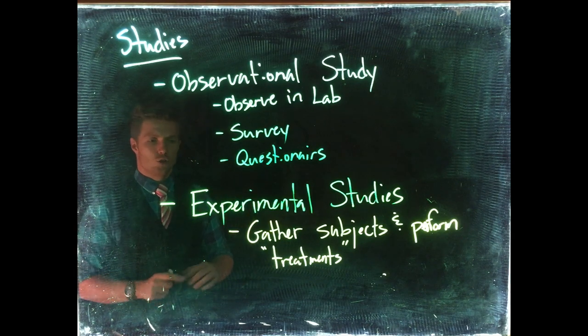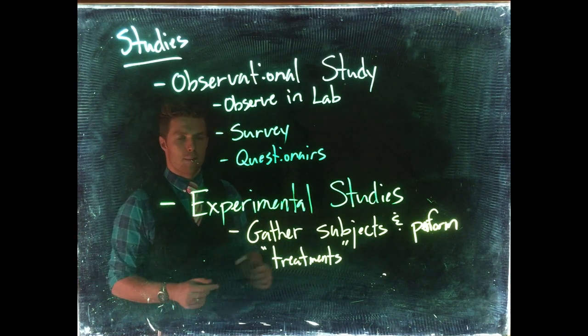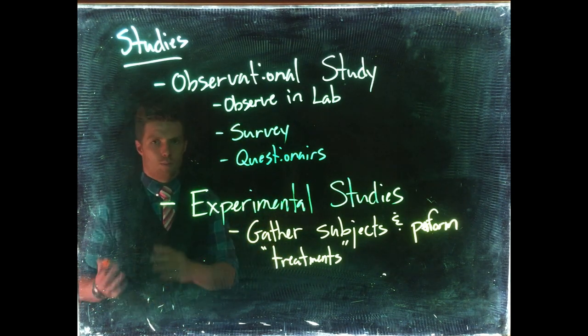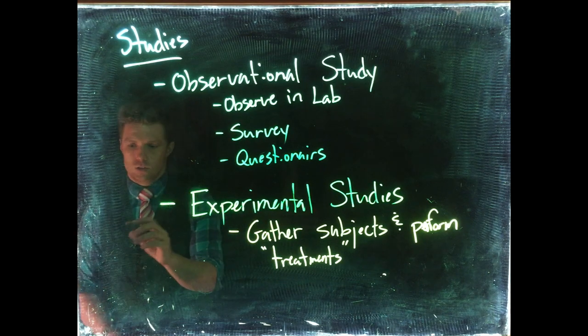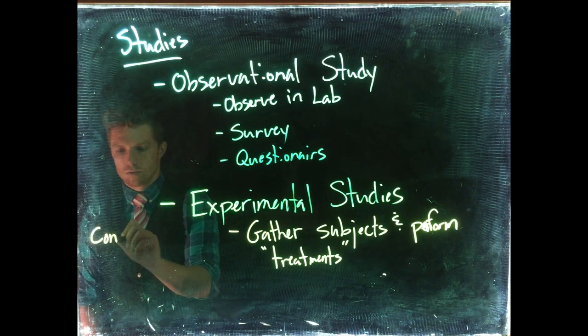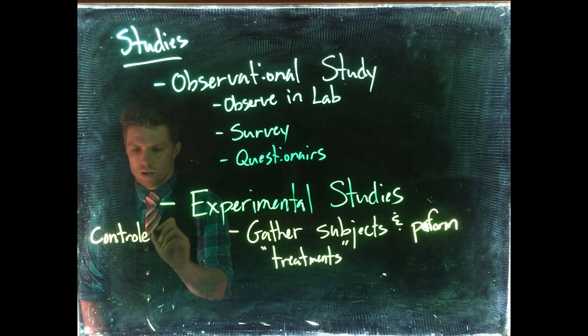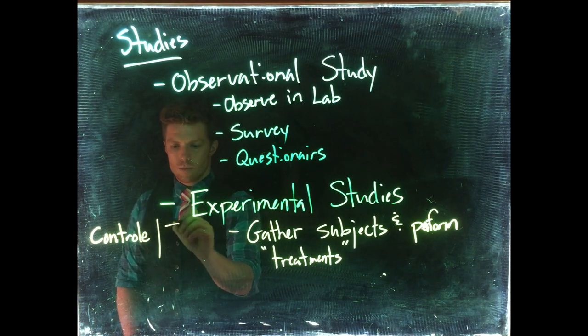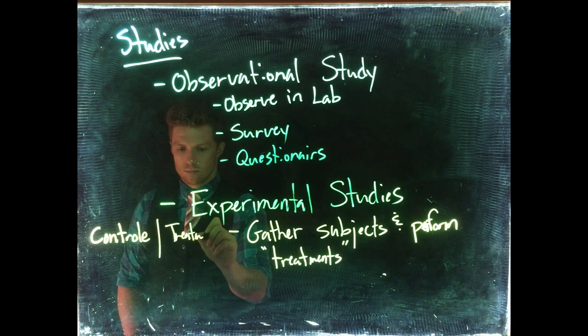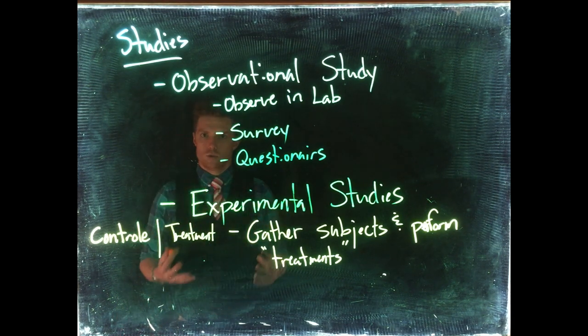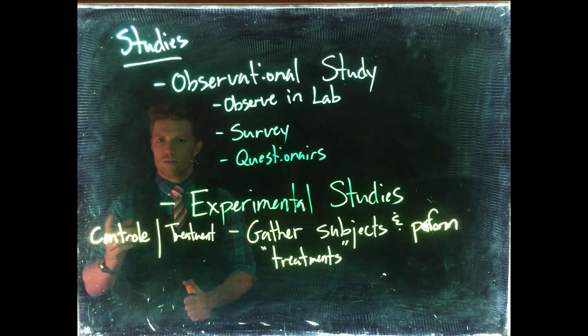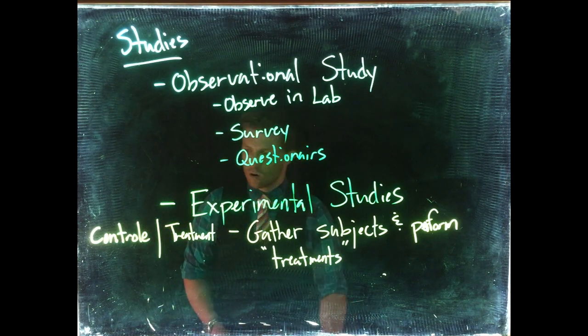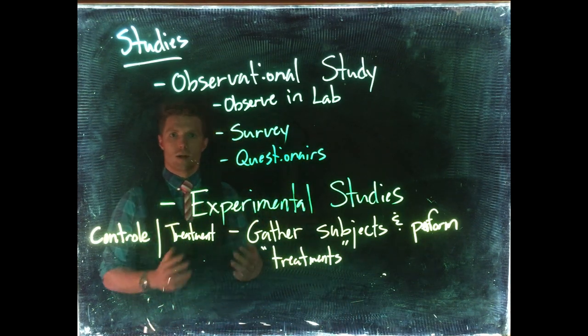That randomization helps smooth out any differences that might happen if we group similar people together. We put one set of people into the control group and the other into the treatment group, and we actually make them do something. The control group might get a placebo pill, and the treatment group gets our new drug. Then we compare the differences.